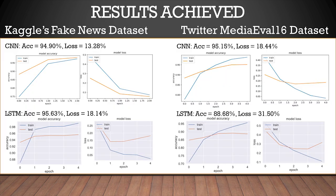Here are the results achieved using different models like CNN and LSTM. For the Kaggle dataset, CNN accuracy is 94.90% and the lowest loss is 13.28%. For the LSTM model, the accuracy is 95.63% and the lowest loss is 18.14%. For the Twitter Mediaeval 2016 dataset, CNN accuracy is 95.15% and the lowest loss is 18.44%. For LSTM, the accuracy is 88.68% and the lowest loss is 31.50%.